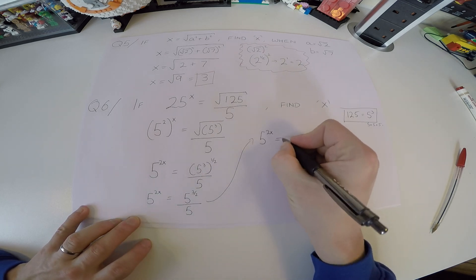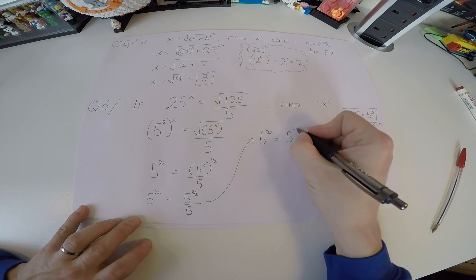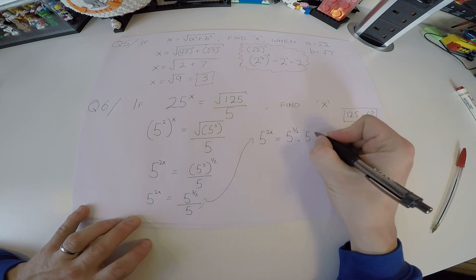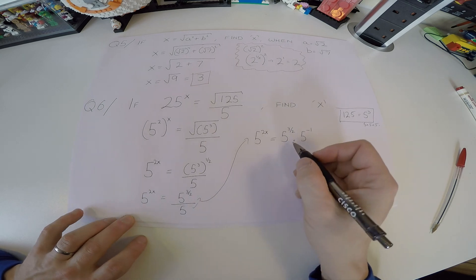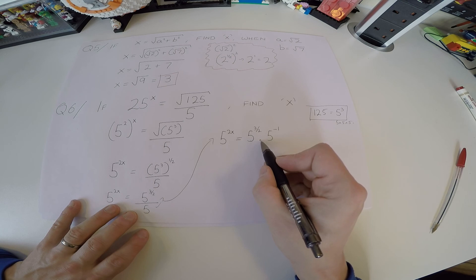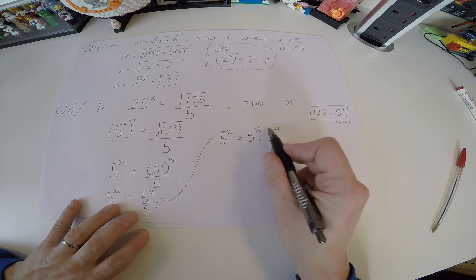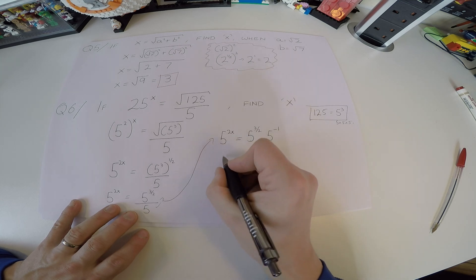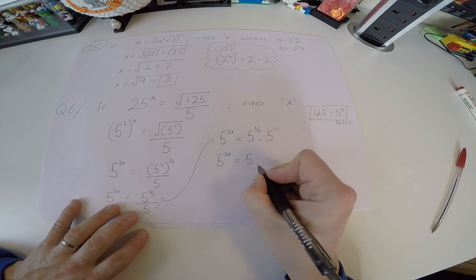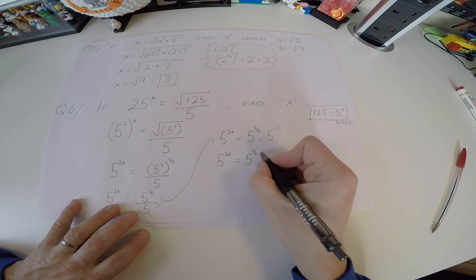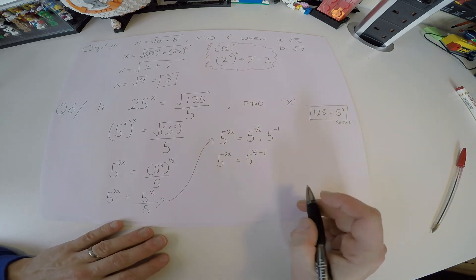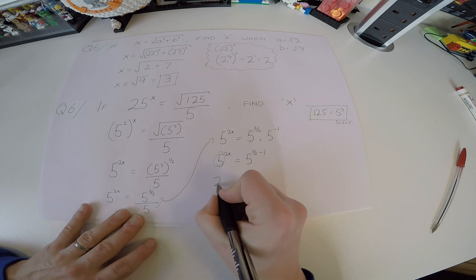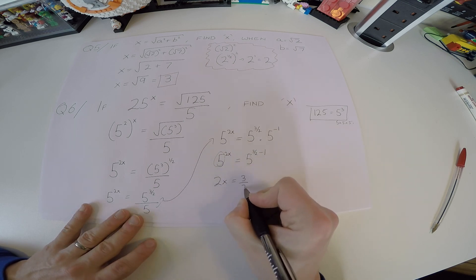So the right side becomes 5 to the power of (3/2 − 1). Since the bases are the same, the powers must be equal: 2x = 3/2 − 1.